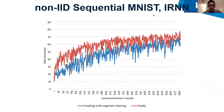Here we can see the results of applying the proposed method to a non-IID sequential MNIST dataset for training an identity recurrent neural network. We compared the proposed federated split learning with federated averaging with segment sharing. The federated averaging method cannot handle multiple segment sequential data without segment sharing. As we can see, the proposed method successfully trains the model on multiple segment sequential data without segment sharing and achieves higher test accuracy in fewer rounds of communication.